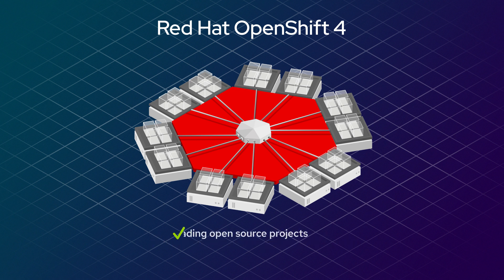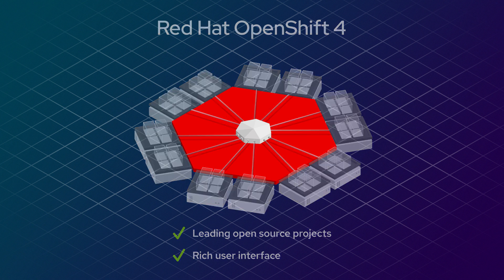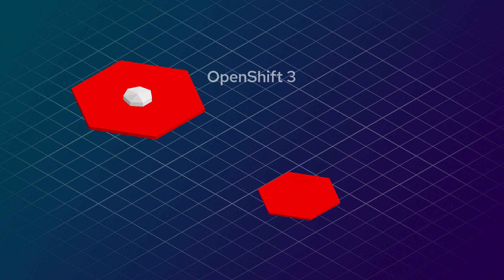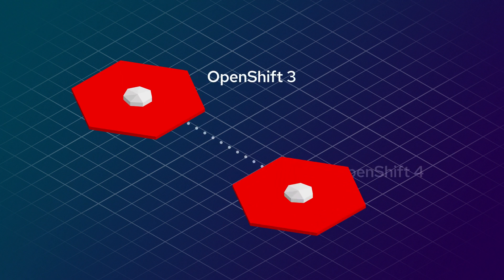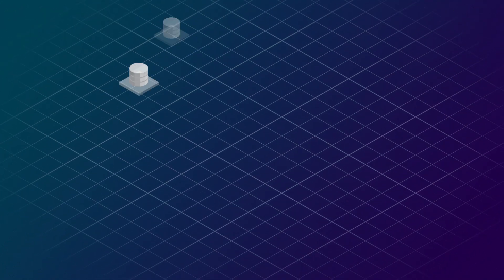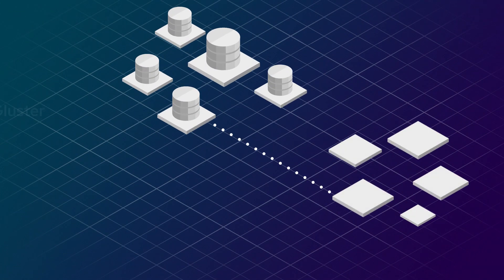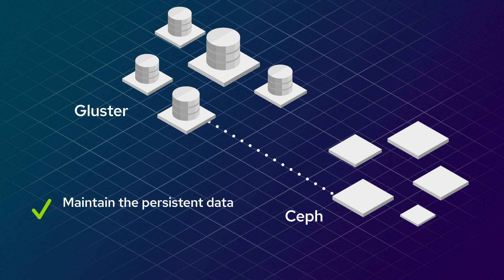These tools take advantage of leading open source projects and are woven together with a rich user interface to provide simplified and flexible workflows. With these tools you can more easily export and import OpenShift 3 cluster resources to OpenShift 4, as well as migrate storage backends like moving from Gluster to Ceph to maintain the persistent data your applications have created.